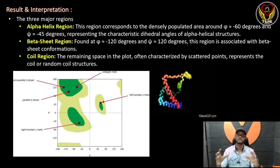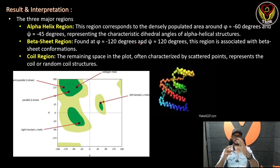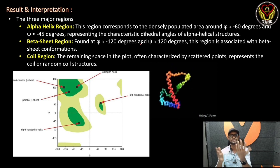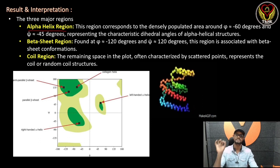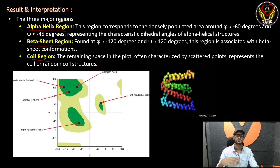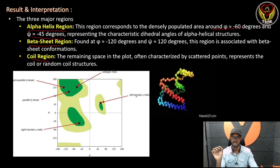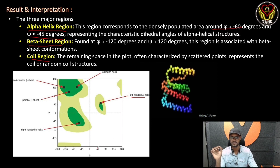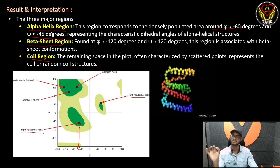Now we come to the most important points: the result and interpretation. If we study the protein in Ramachandran's plot, we can identify four regions: alpha helix regions, beta sheet regions, and coil regions. For the right-handed alpha helix, the phi angle is approximately -60 degrees and the psi angle is approximately -45 degrees.